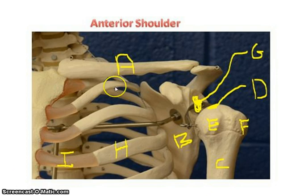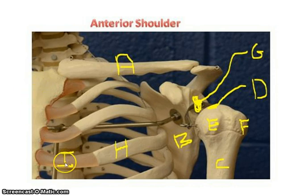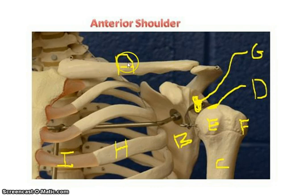What you're looking at with this picture is an anterior view. Just to get straightened out: here's your sternum, there's your manubrium, there's your jugular notch, we have the costal cartilage, and we have the rib cage. This bone up here, commonly called your collarbone, but you're not going to call it that, is the clavicle.